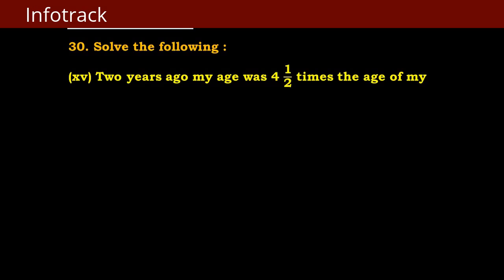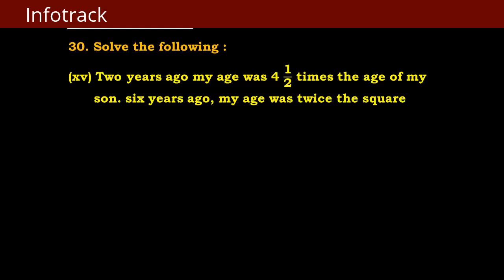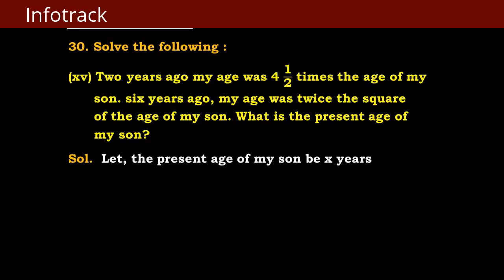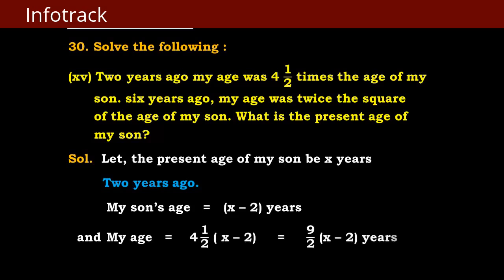Question 15: 2 years ago my age was 4 and a half times the age of my son. 6 years ago my age was twice the square of the age of my son. What is the present age of my son? Let the present age of my son be x years. 2 years ago the son's age is x minus 2, and my age becomes 9 upon 2 into x minus 2 years.